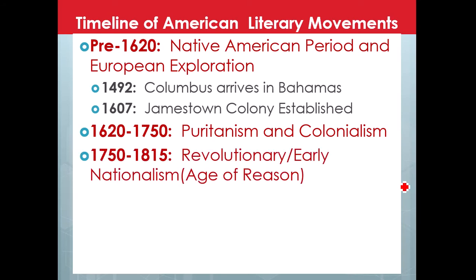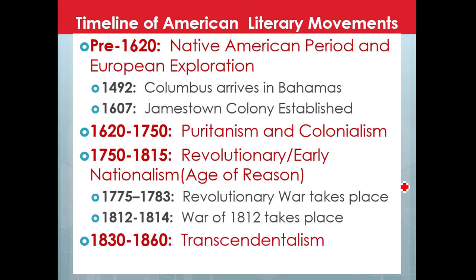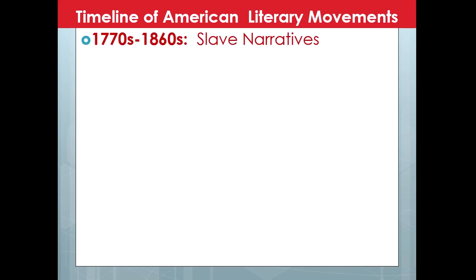The Mayflower landing in 1620 moves us into our next period of Puritanism and colonialism. After that period, coming into the American Revolution, we have the Revolutionary and Early Nationalism period. Sometimes this is also called the Age of Reason, lasting until about 1815. The Revolutionary War took place, and then also after the War of 1812, which would be that early nationalism period. Then around 1830 to 1860, we have Transcendentalism, which kind of happens around the same time as Romanticism.